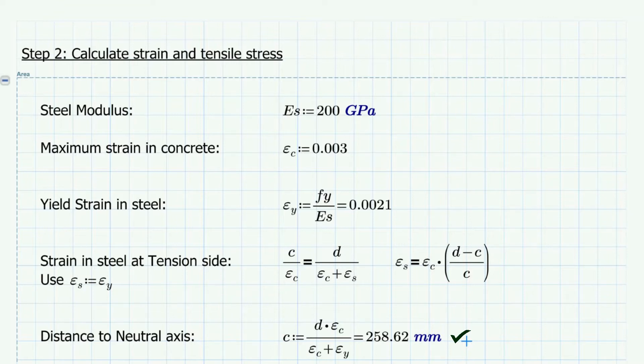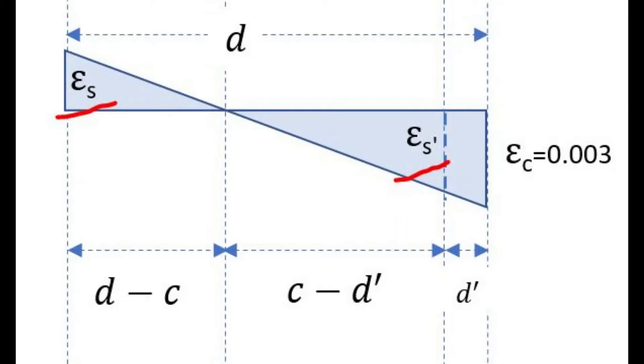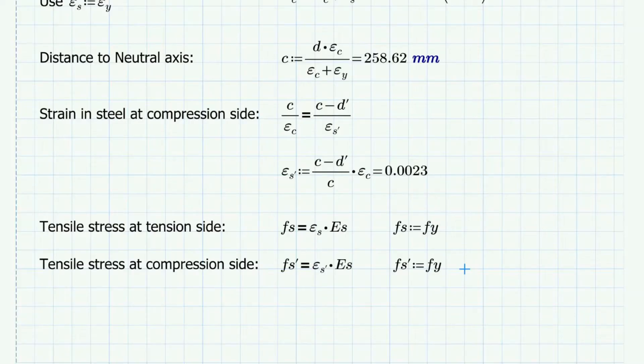Using the C value, the distance to the neutral axis, let's check the strain in steel at compression side, which is given by this formula. So 0.0023 is greater than the yield strain 0.0021. This means the steel at compression side also yields. So we will use Fy for the tensile stresses at tension and at compression sides.